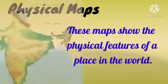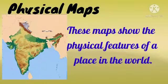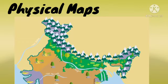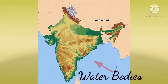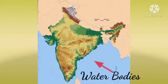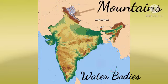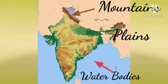Second, physical maps. These maps show the physical features of a place in the world. They generally show things like rivers, mountains, plains, hills, etc. You can see in this map, different colors are used to indicate different physical features. Blue color indicates water bodies, brown color indicates mountains, and green color indicates plains.